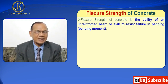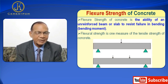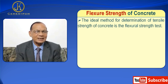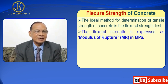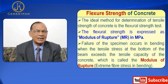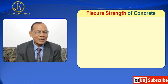Flexural strength of concrete is the ability of an unreinforced beam or slab to resist failure in bending moment. Flexural strength is one measure of the tensile strength of concrete. The ideal method for determination of tensile strength of concrete is the flexural strength test. The flexural strength is expressed as modulus of rupture (MR) in megapascal (MPa). Failure occurs in bending when the tensile strength at the bottom of the beam exceeds the tensile capacity of the concrete, which is called the modulus of rupture — that is, extreme fiber stress in bending.